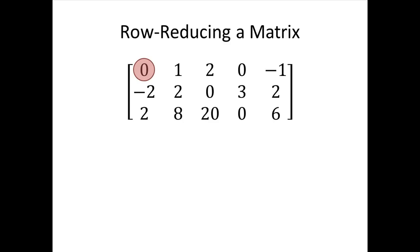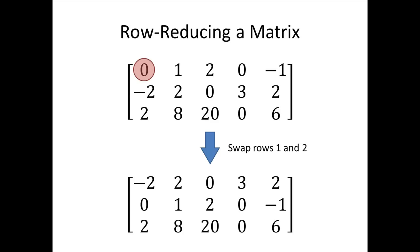Echelon form is all about leading entries in a row. Looking at our first row, the leading entry doesn't occur until the second column, so that zero in the first row, first column isn't where we want it. We'd like the leading entry in the first row to be in the first column. We can make that happen by swapping rows. If we swap rows one and two, the leading entry in the first row becomes negative two. Notice we had a choice — we could have swapped rows one and three, which would have resulted in a different echelon form. That's why we say there's no uniqueness when talking about the echelon form of a matrix.